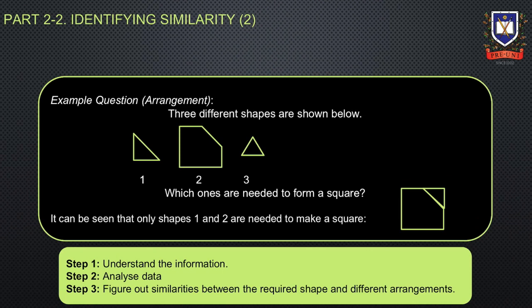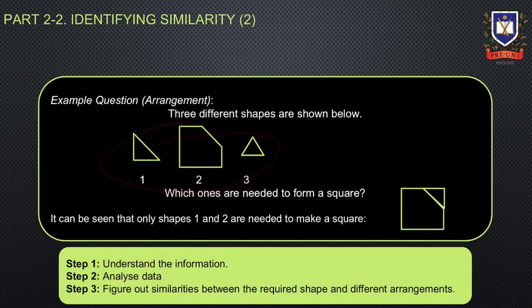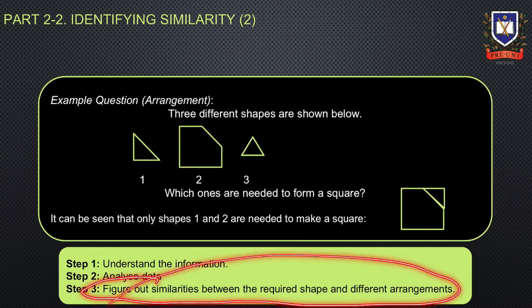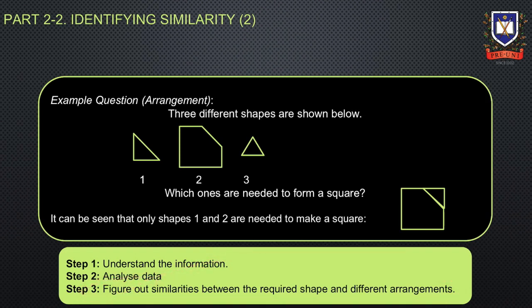The general steps to solve this question are: first, understand the information; then analyze the data — in this case, the three shapes provided — and then figure out similarities between the required shapes and their different arrangements.